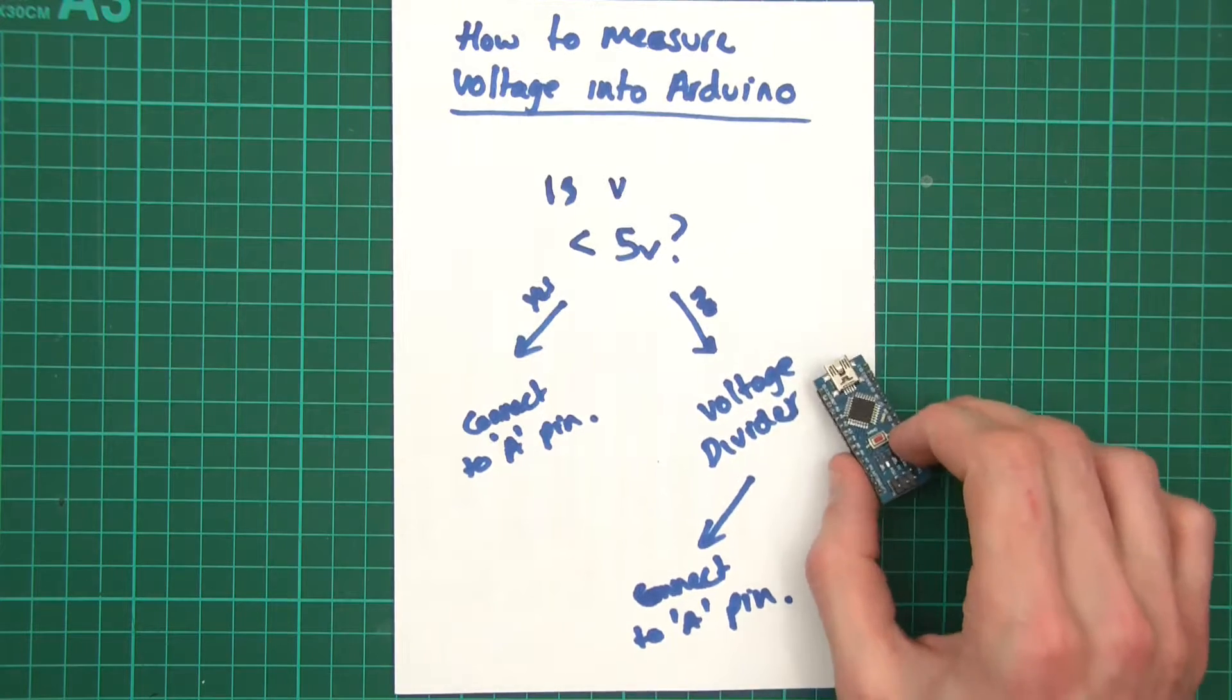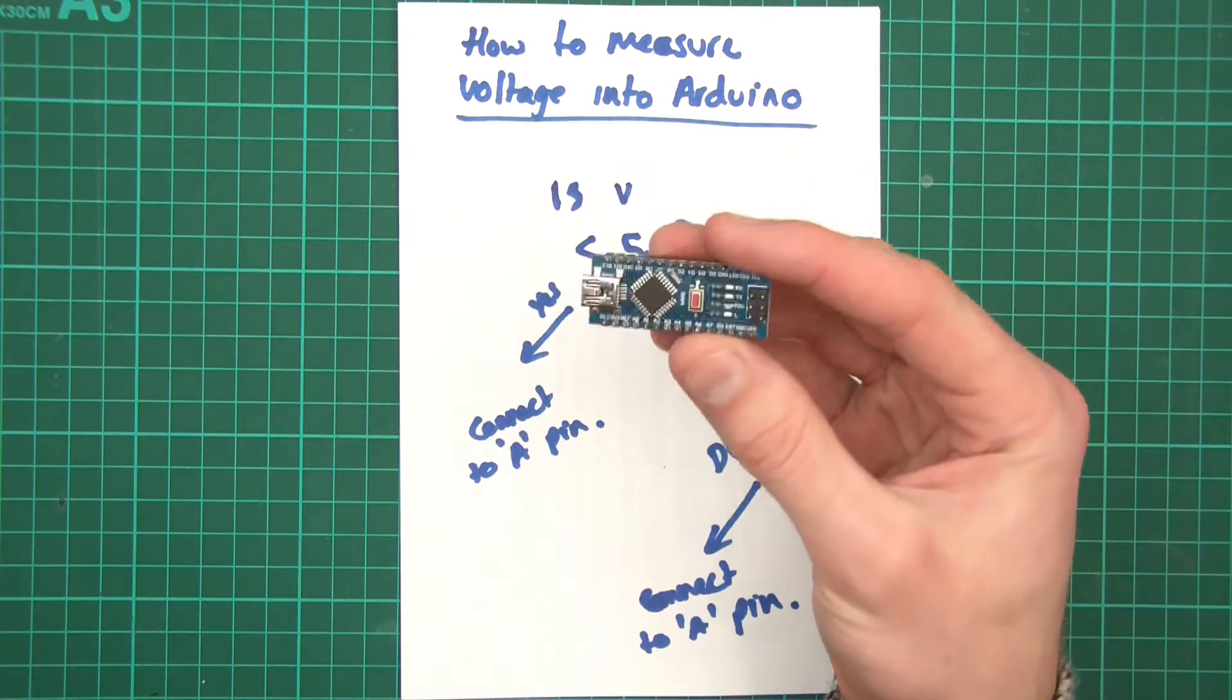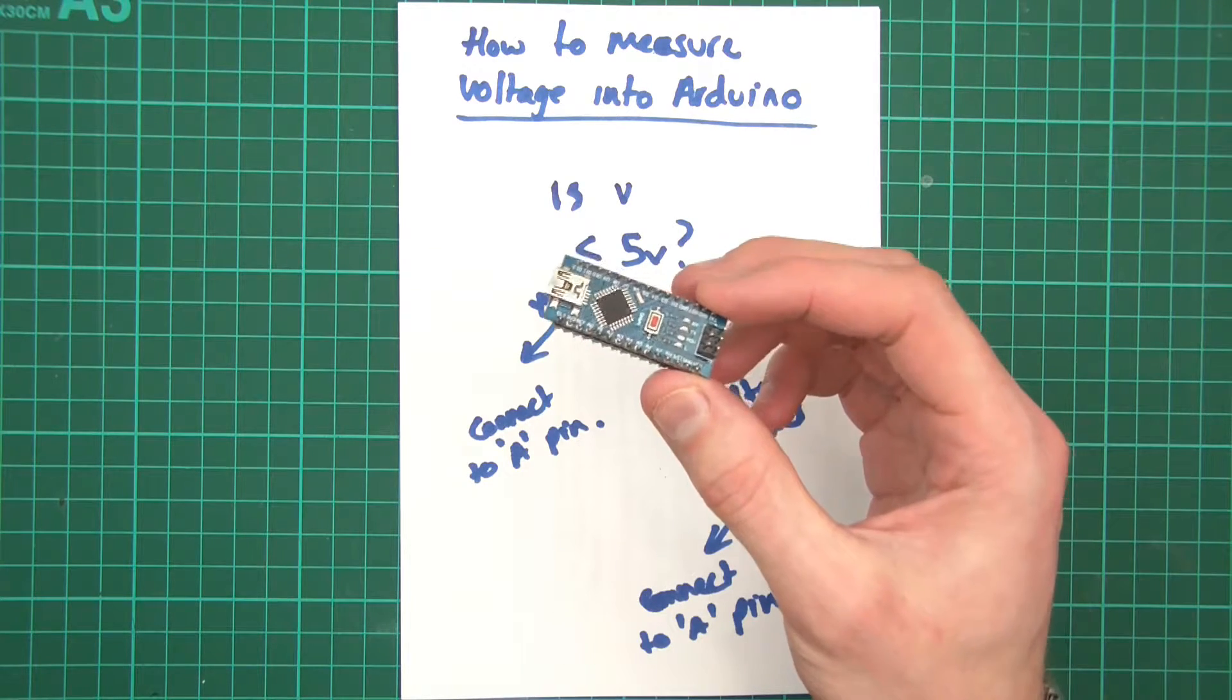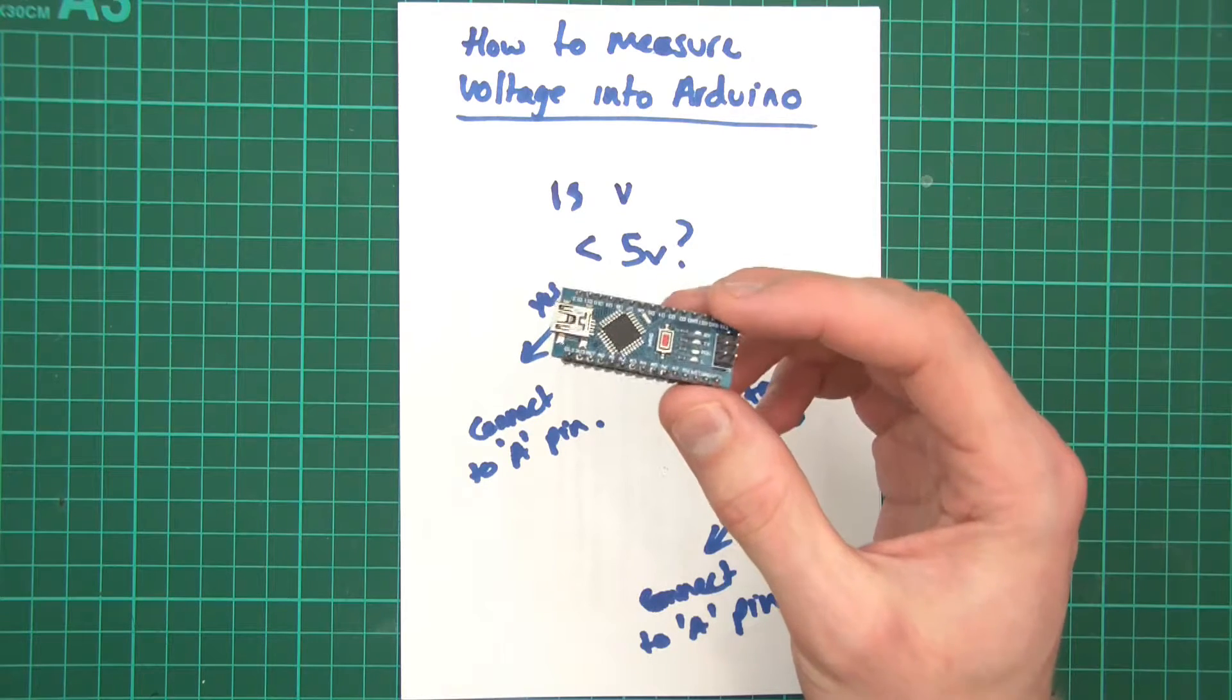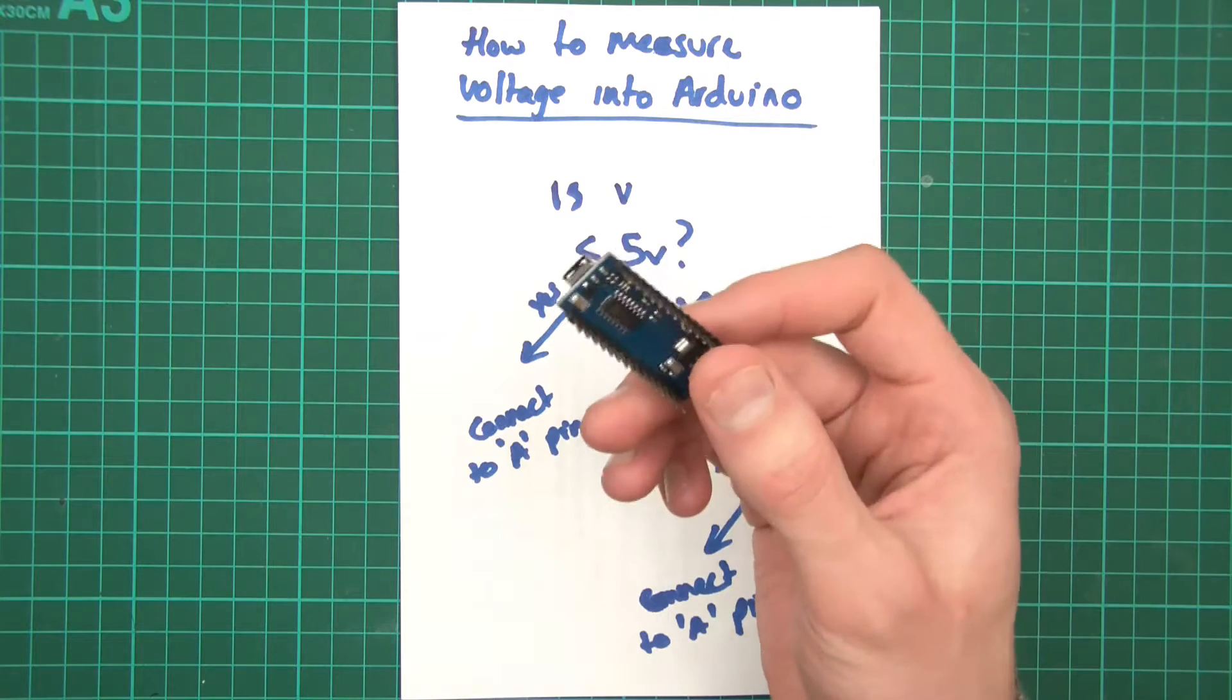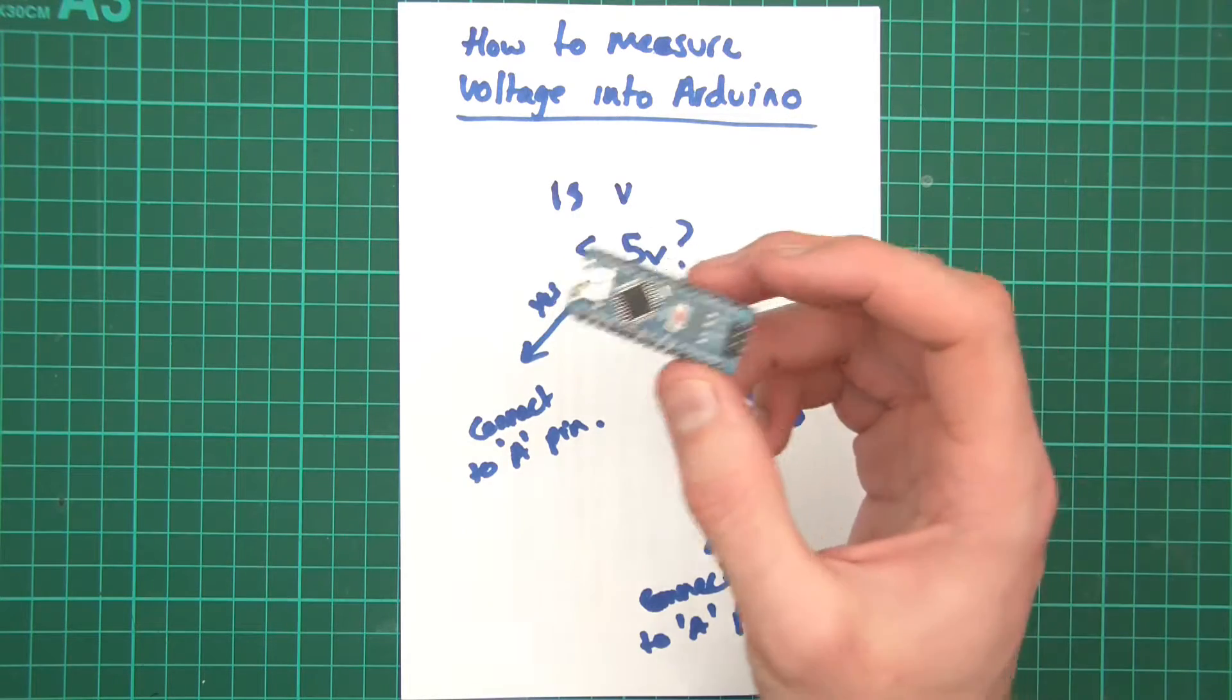But what if you've got a car battery, or something else, and it's higher than 5 volts, then what? Well, very simply, if you've got something that's higher than 5 volts, and you want to read it into the Arduino, you can't. You can't read more than 5 volts into the Arduino, and that's pretty much final. You can't do it. If I was to read more than 5 volts into here, so let's say 10 volts, 12 volts, or whatever, I'd simply destroy the Arduino. It can't do it.